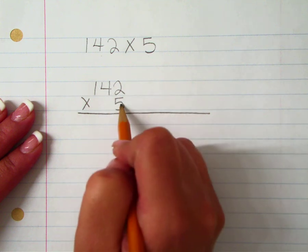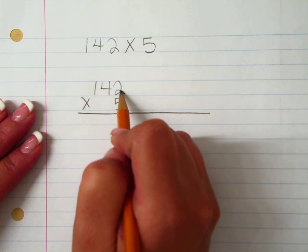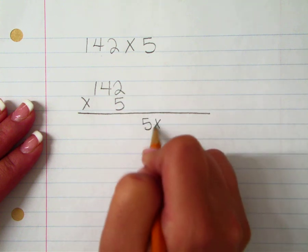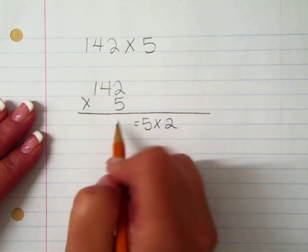So it would be 5 times the value of this digit, which is 5 times 2, which gives us 10.